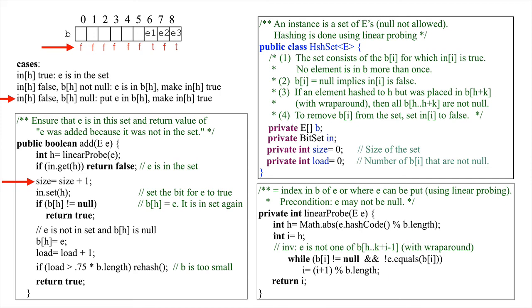Next, since in[h] is false, e has to be added to the set. So, the size of the set is increased and bit b[h] is set to true. If b[h] is not null, then b[h] equals e and this means that e was previously removed from the set. Nothing more needs to be done and true is returned.